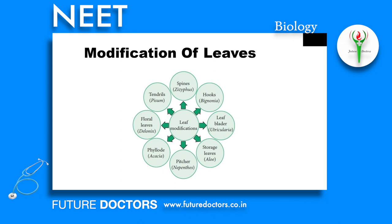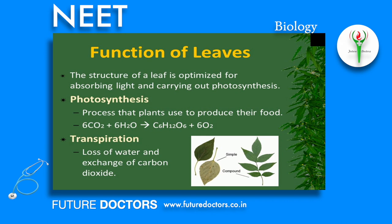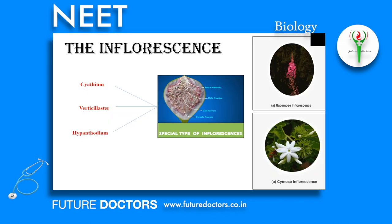Leaf spines: The entire leaf or part of a leaf may be modified into a pointed structure called a spine — example: Opuntia. Scale leaves are thin membranous leaves found at the nodal region; each contains an axillary bud in its axil — example: Zingiber officinale. Functions of leaves: The structure of a leaf is optimized for absorbing light and carrying out photosynthesis, the process plants use to produce their food. Transpiration — the loss of water and exchange of carbon dioxide — is also a function of the leaf.